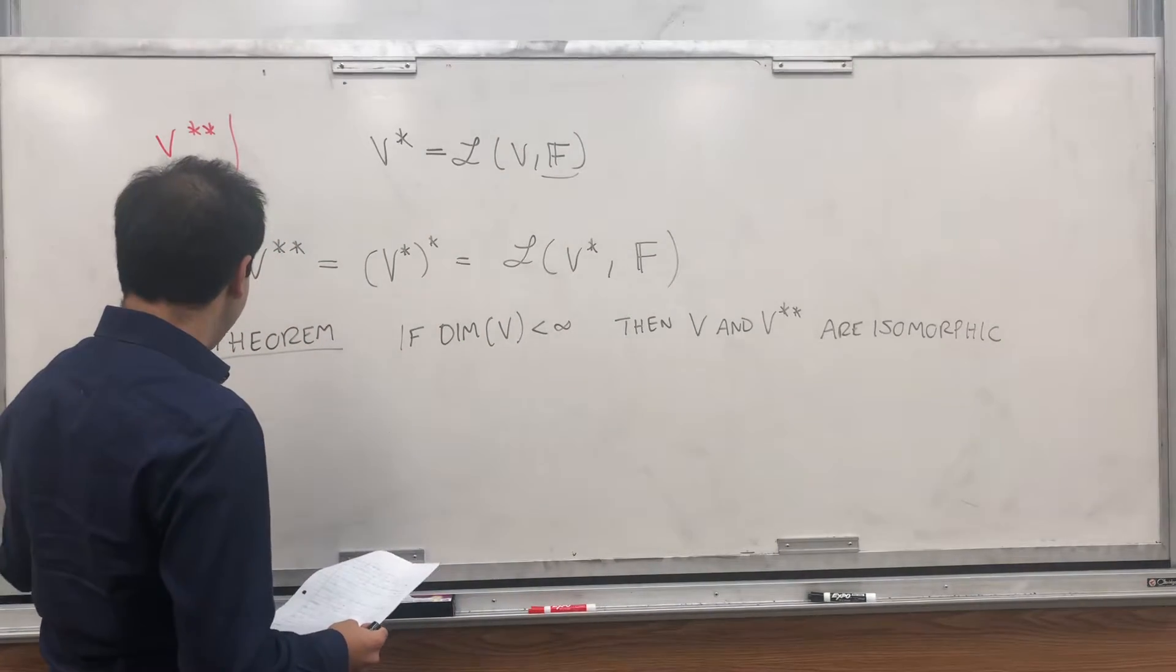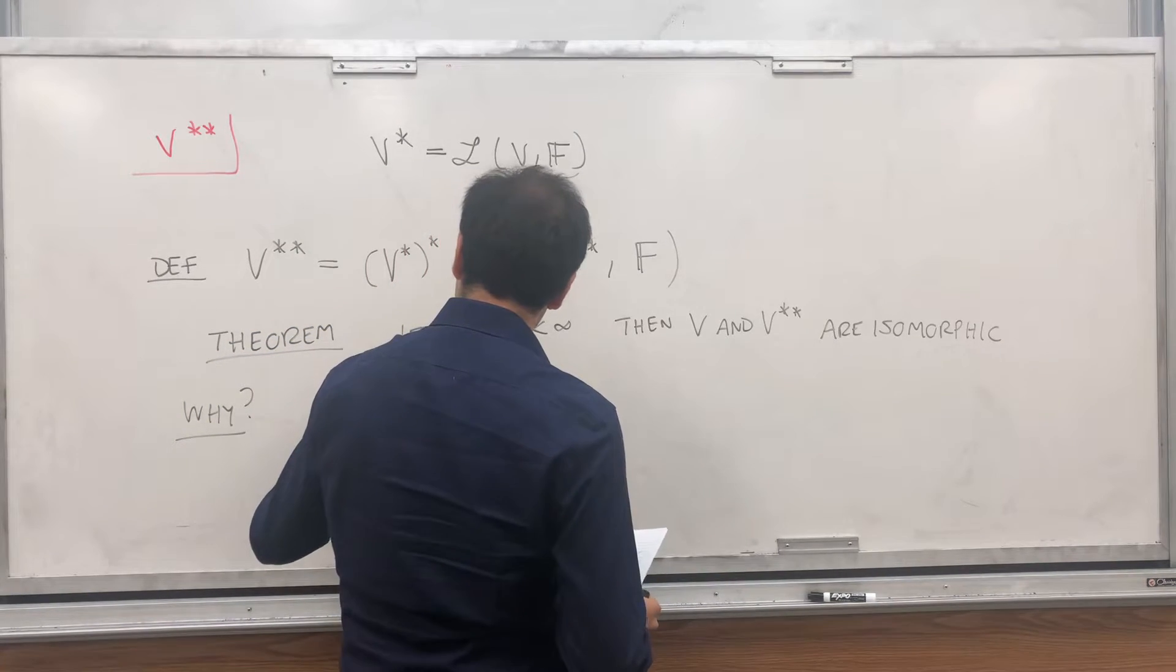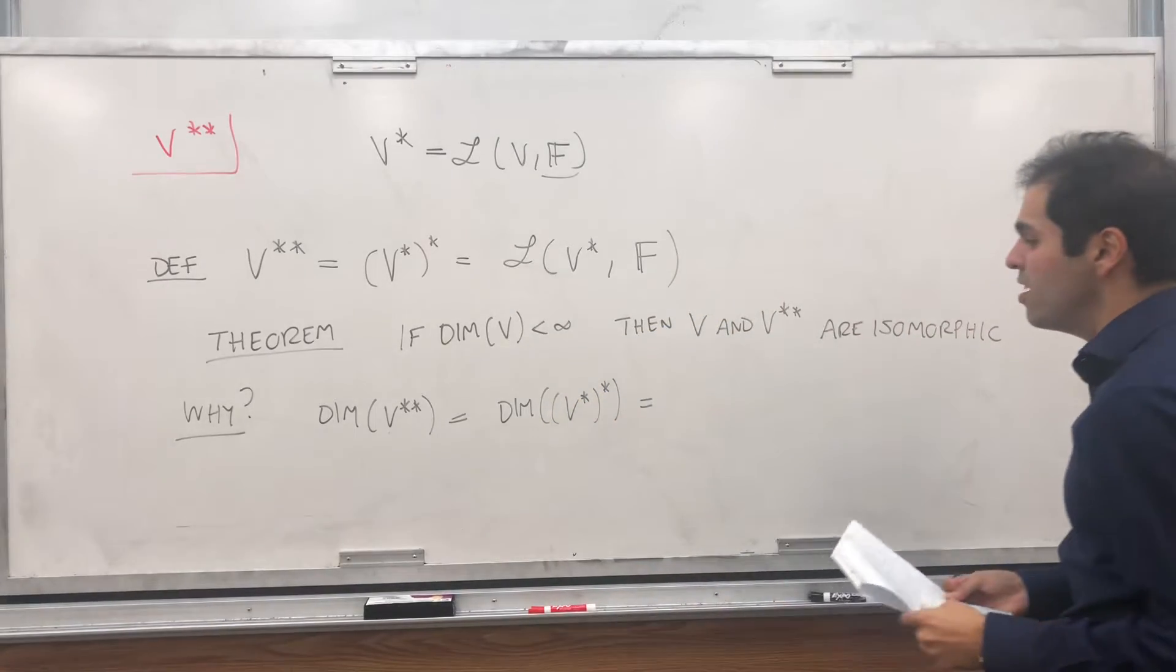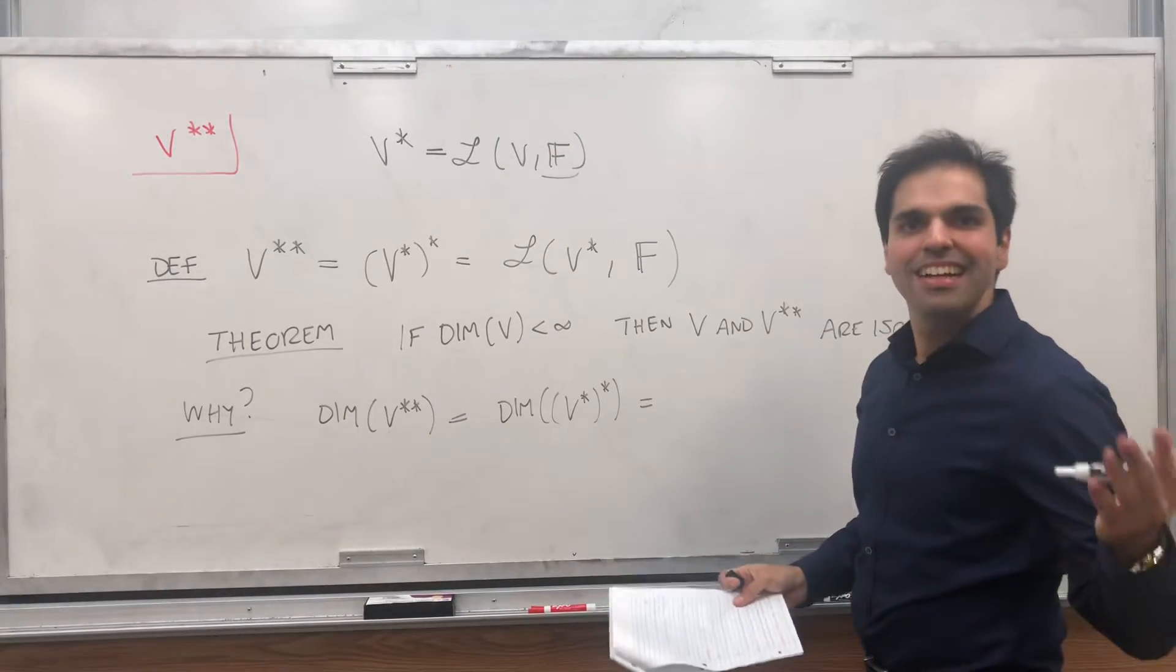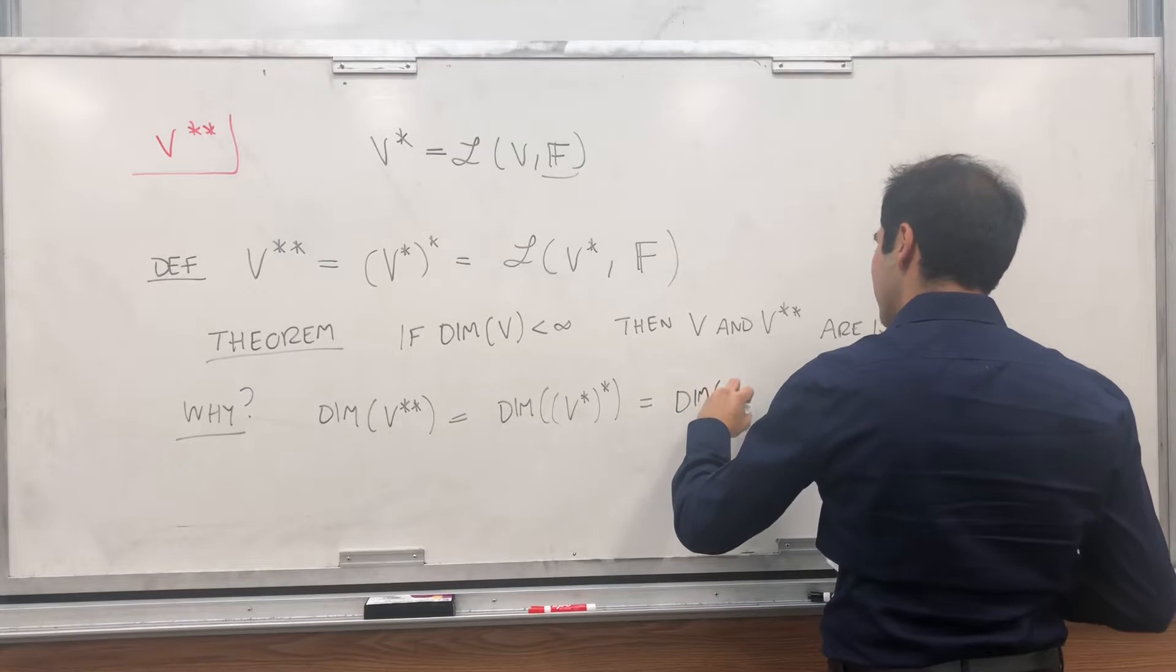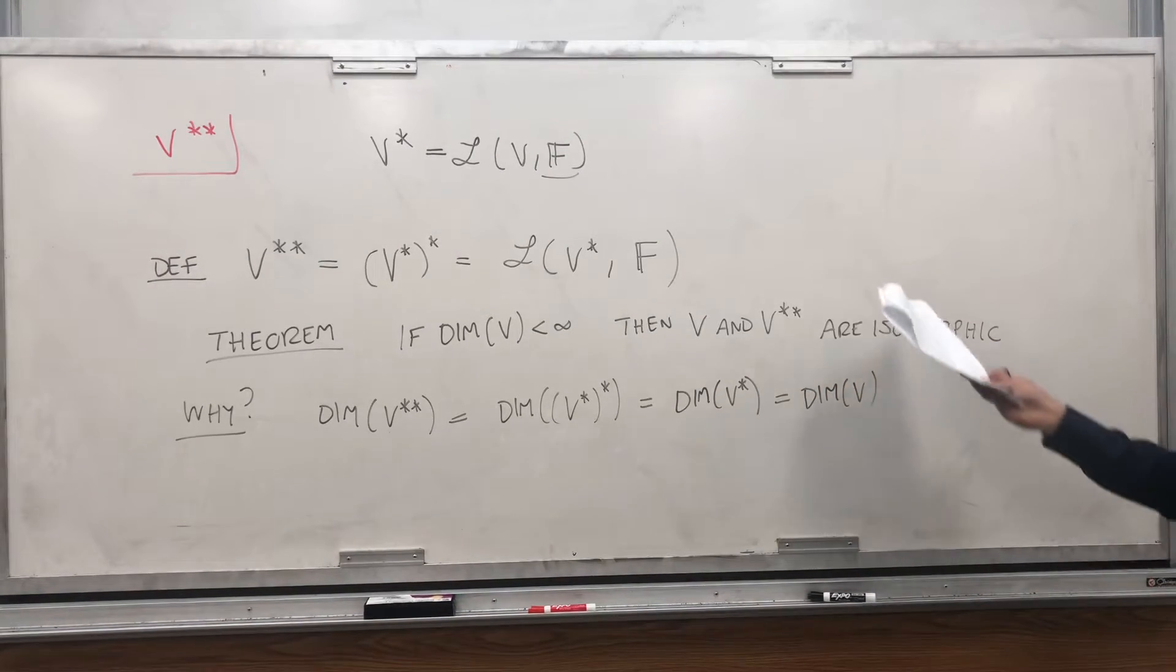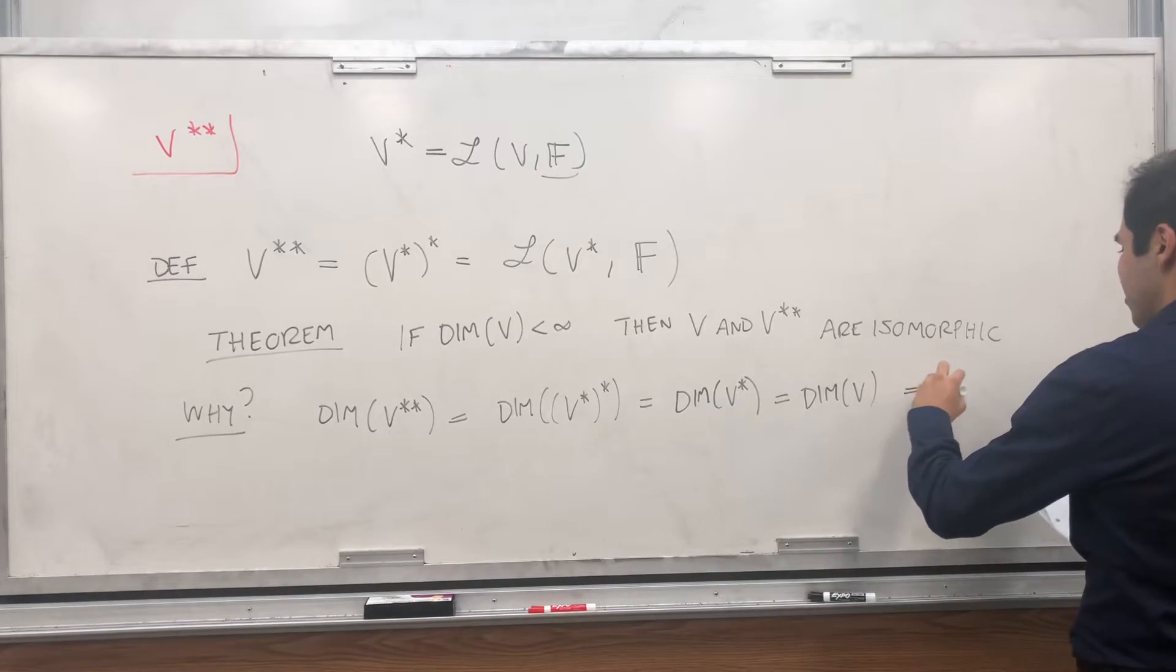And let me give you a proof that's not satisfying, and then I'll show you a cooler proof. Why? Because dimension of V double star, well, that's the dimension of V star star. And what have we shown before? We've shown that a vector space and its dual always have the same dimension. That's why this stuff about dual basis is very important. So this is the dimension of V star. And I just said V star and V have the same dimension. So V double star and V have the same dimension, and they're finite dimensional. So there's this other video I've done where I showed that it follows that they're isomorphic.